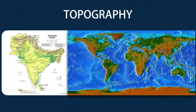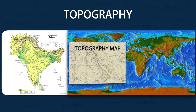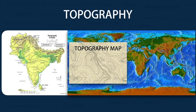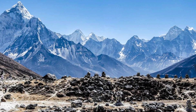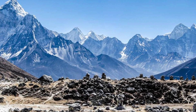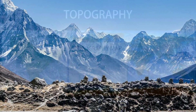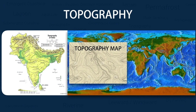Topography is the study of the shape and features of the surface of the Earth or any other planet, moon, or even an asteroid, and recording it on a topographic map. Topography in a narrow sense involves the recording of relief or terrain or landforms such as hills, mountains, valleys, plains, rivers etc., and recording this three-dimensional phenomena on a two-dimensional topographic map with the help of latitude, longitude and elevation from sea level of that landform.